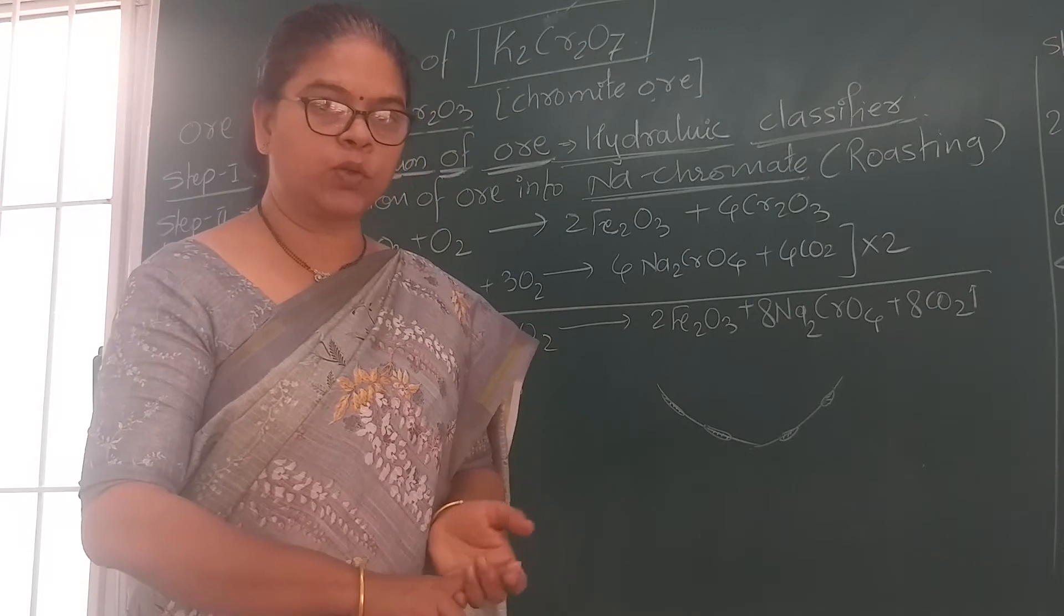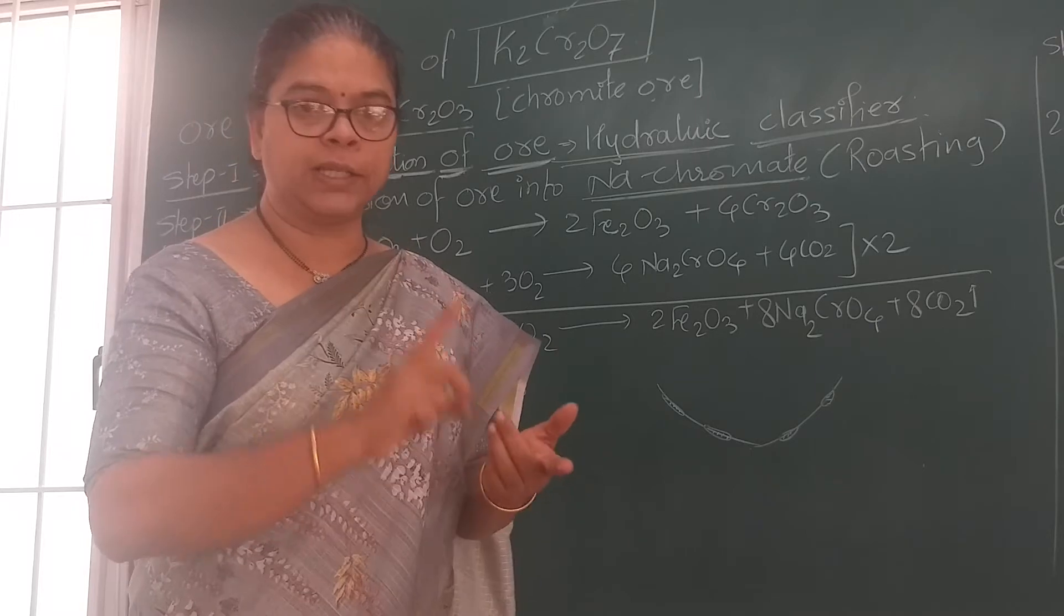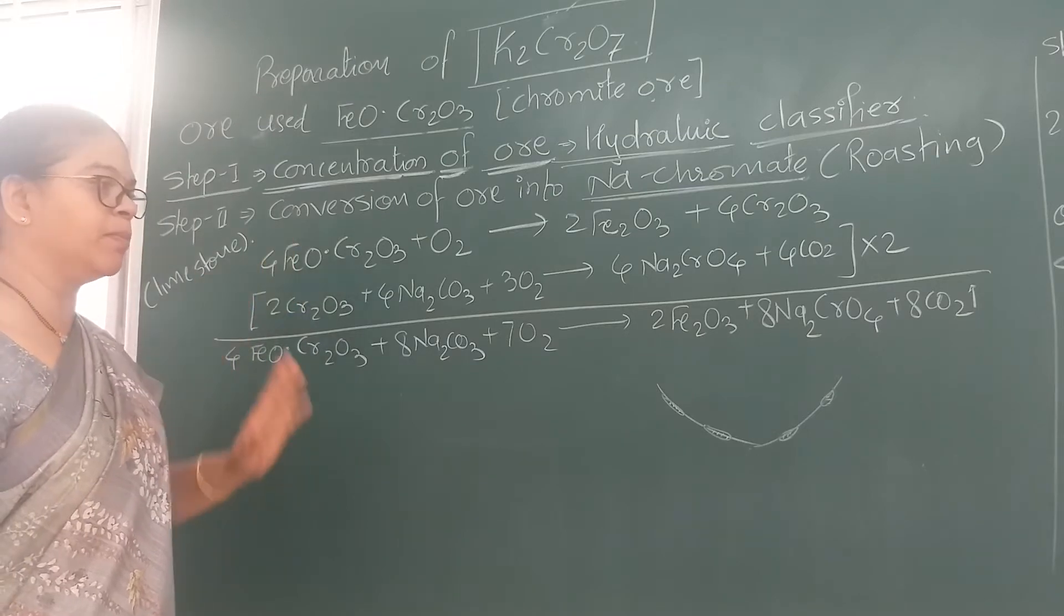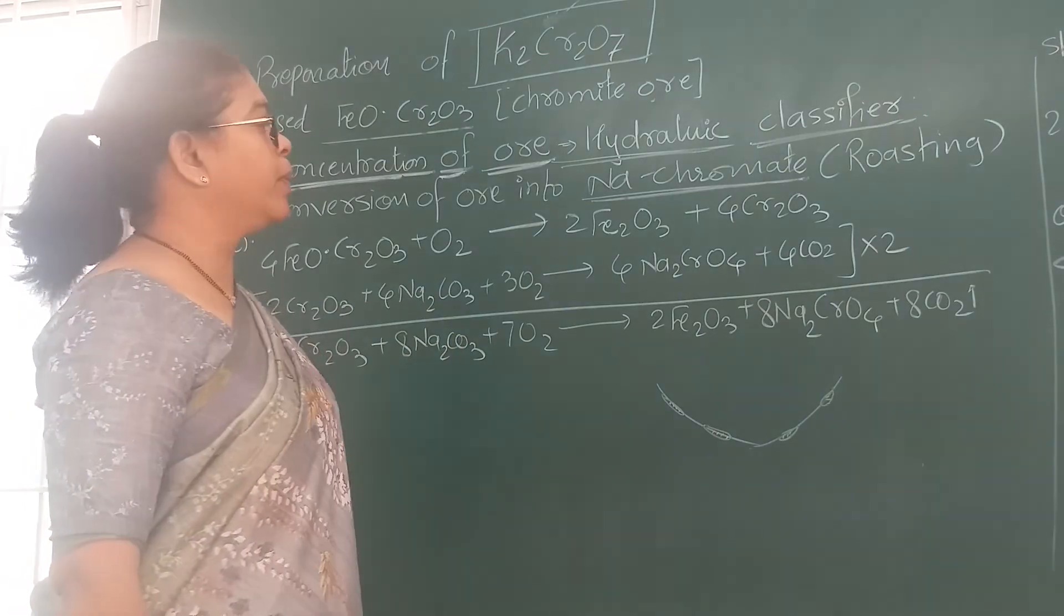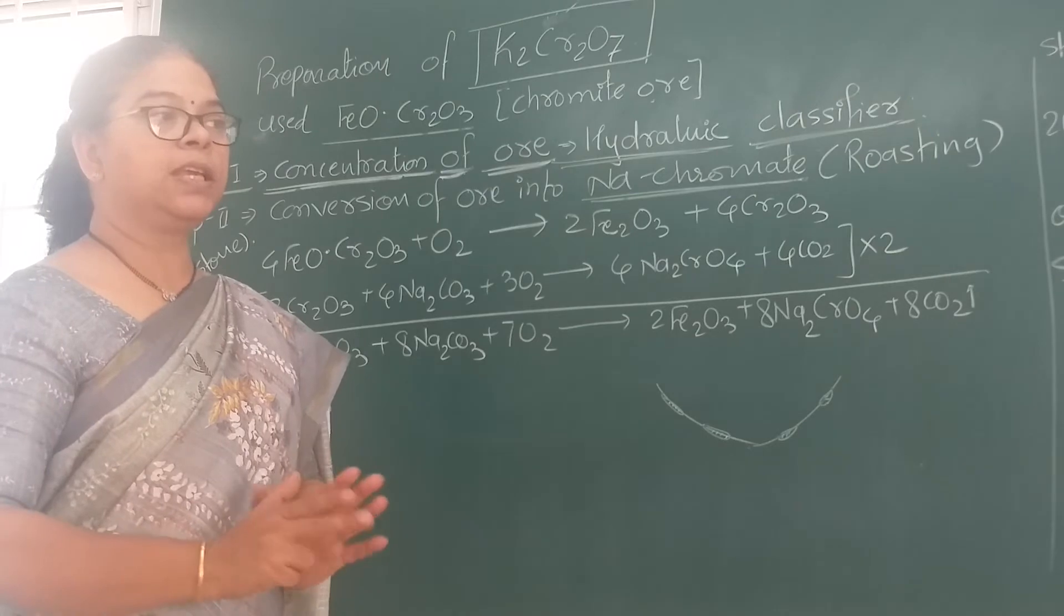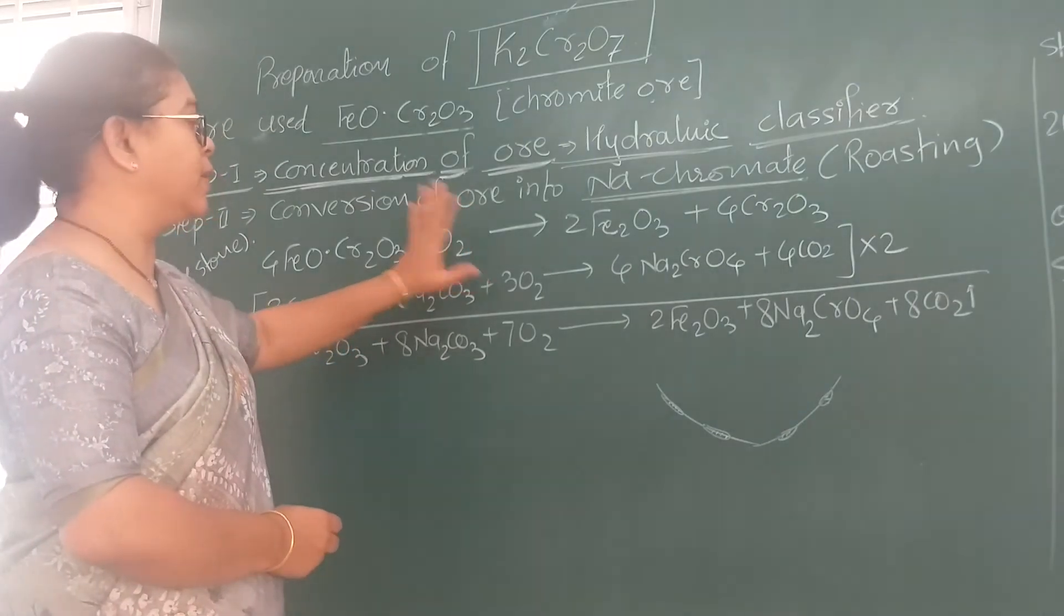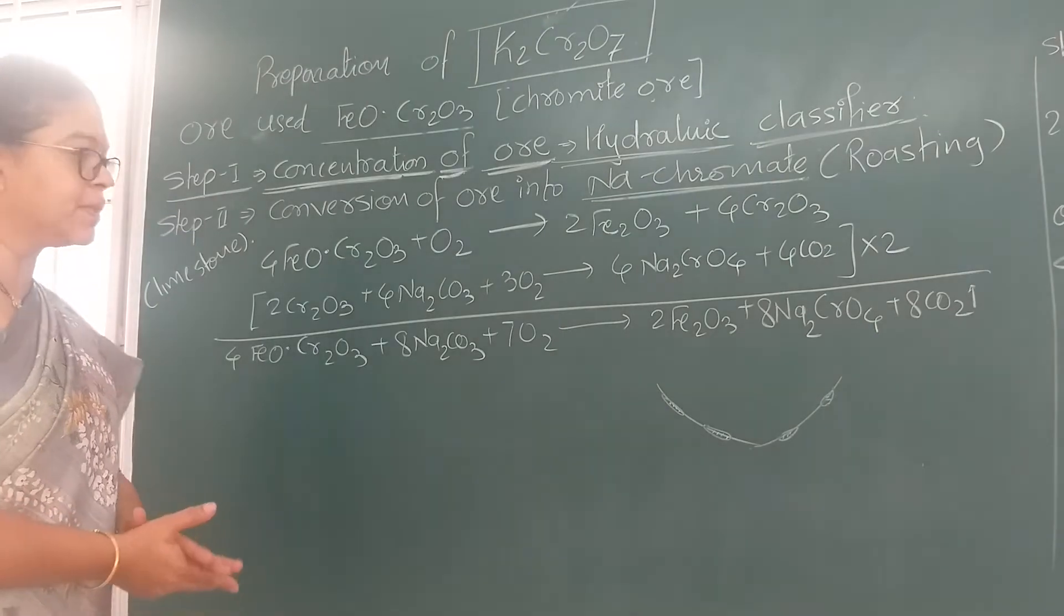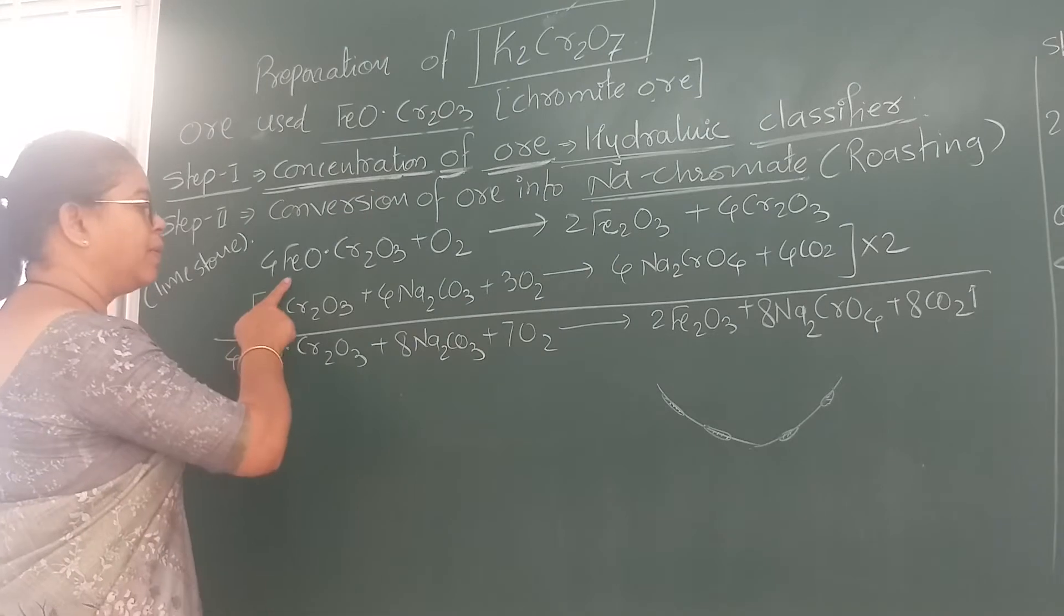The first step is concentration of ore using hydraulic classifier, where in a stream of water light wet impurities are removed. Second step is conversion of ore into sodium chromate Na₂CrO₄. In this process, excess of oxygen is used. Roasting in reverberatory furnace is used.